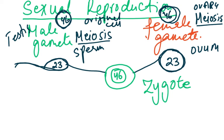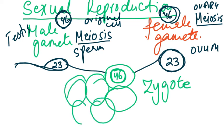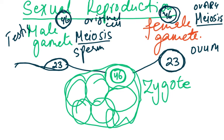The zygote's 46 chromosomes are the master plan — determining whether the human will be male or female, their height, skin color, eye color, hair color and texture. Everything is encoded here. This zygote then divides by mitosis: one cell becomes two, then four, then eight, forming a ball of cells that develops into a human being.